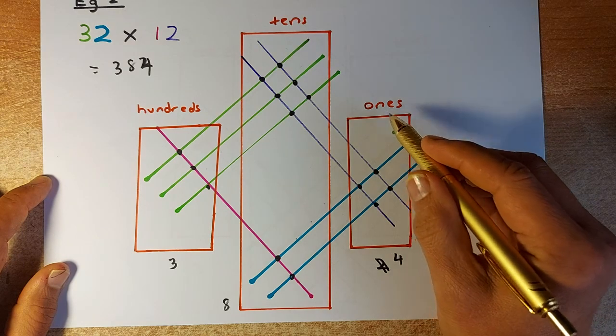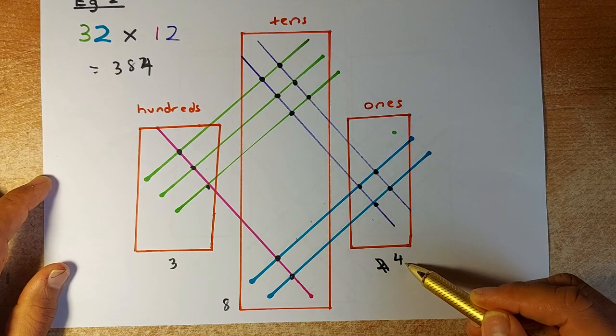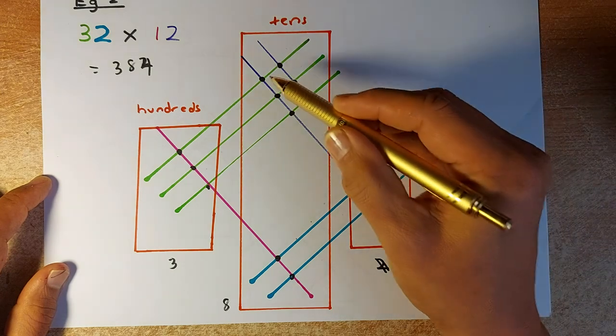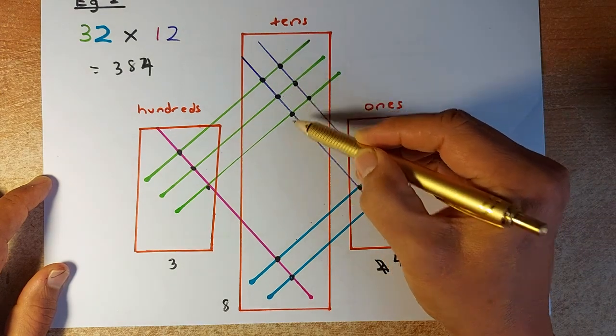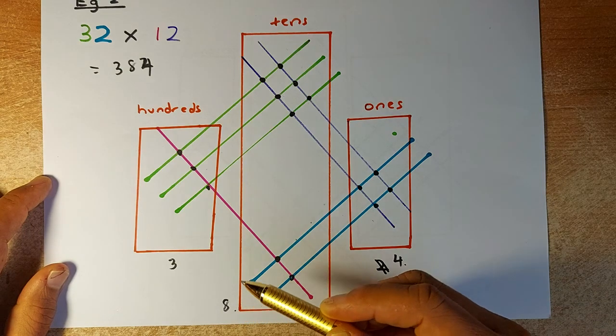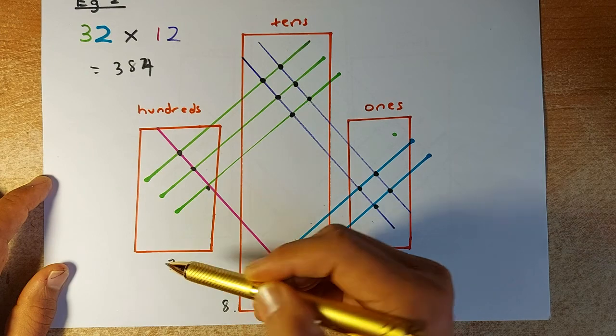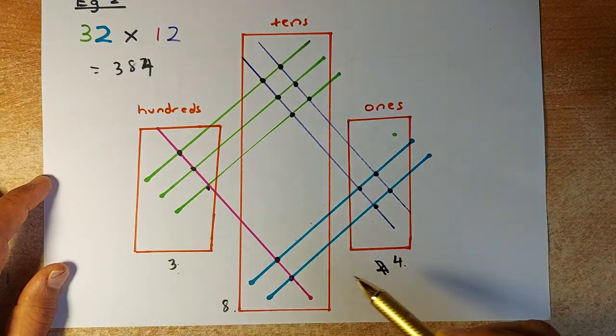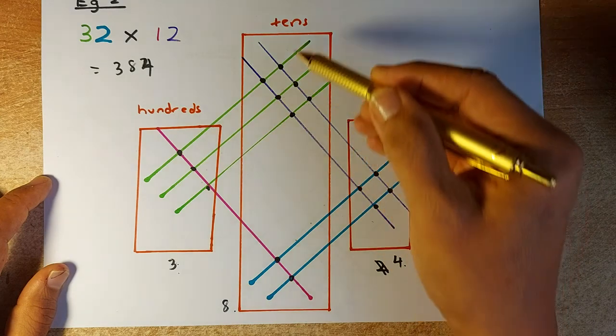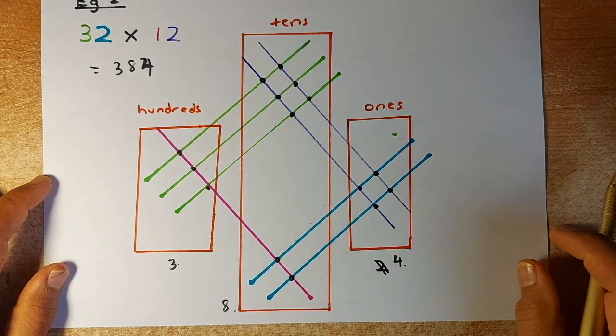For the ones, we count the points of intersection: 1, 2, 3, 4. So there'll be 4 ones. For the tens, you count 1, 2, 3, 4, 5, 6, 7, 8. So there'll be 8 tens. And last but not least, the hundreds: 1, 2, 3. So the final answer is 384, or 300 plus 80 plus 4.